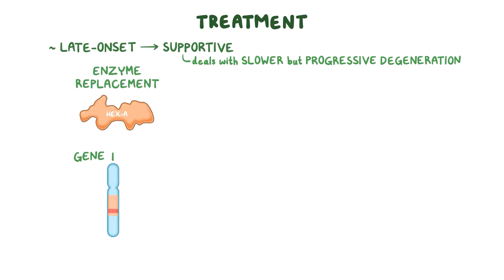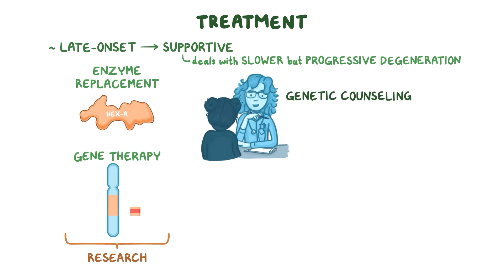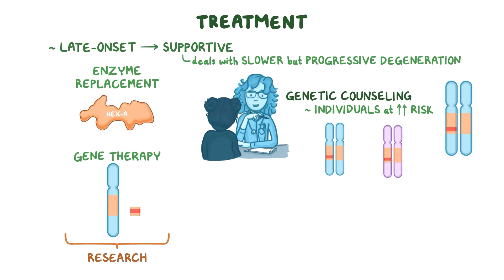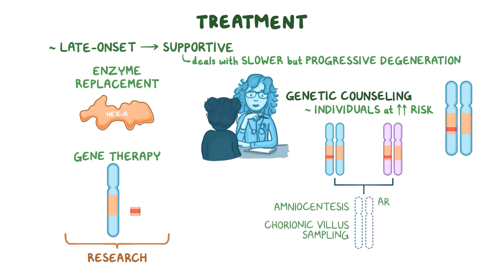Enzyme replacement or gene therapy continue to be areas of research, but until they are in hand, genetic counseling for individuals at high risk can help prevent passing on the mutations associated with TSD. Couples at risk of having an affected child have options like amniocentesis and chorionic villus sampling, as well as artificial insemination, ovum donation, and in vitro fertilization to have children who don't have Tay-Sachs disease or related GM2 disorders.